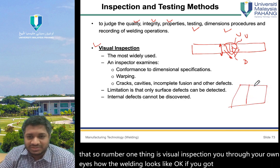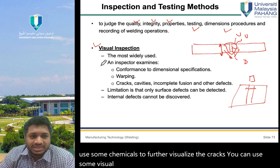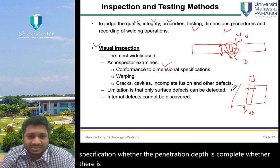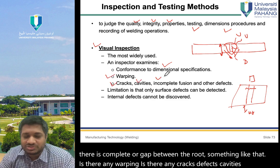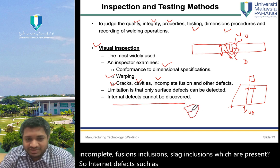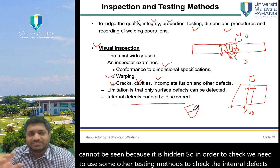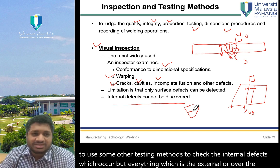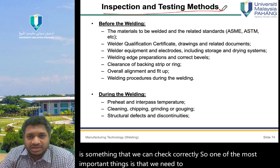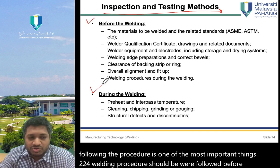Number one is visual inspection — examining the weld with your own eyes. You can see whether there are cracks present, use chemicals to further visualize cracks, and check dimensional conformance, penetration depth, root gap, warping, cavities, incomplete fusions, and slag inclusions. Internal defects cannot be seen visually since they are hidden, but external defects can be checked directly.